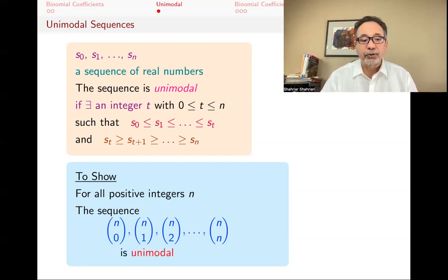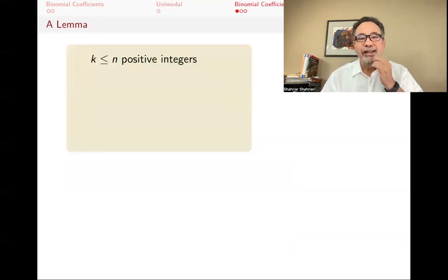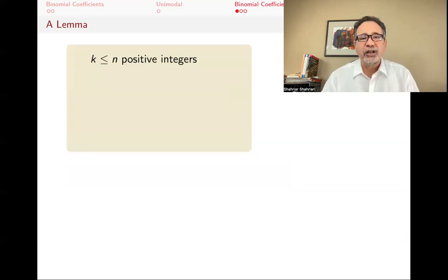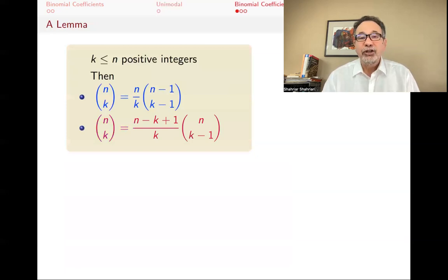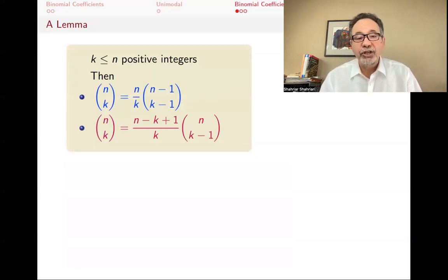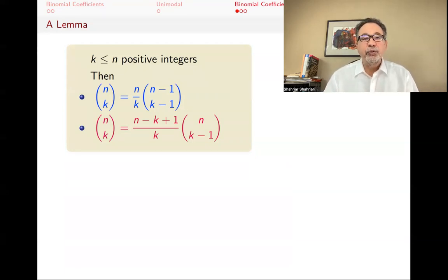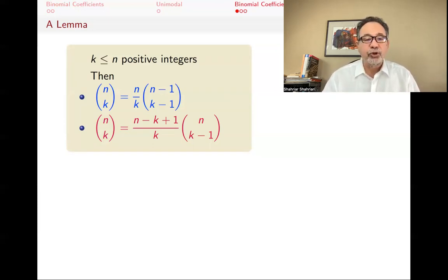First we prove a lemma that is useful in many situations, especially with induction on binomial coefficients. The lemma states: n choose k equals (n/k) times (n−1 choose k−1). Also, n choose k equals ((n−k+1)/k) times (n choose k−1). The first identity we don't actually need for the unimodality proof, but it's very useful in general. The second one is what we'll actually use.